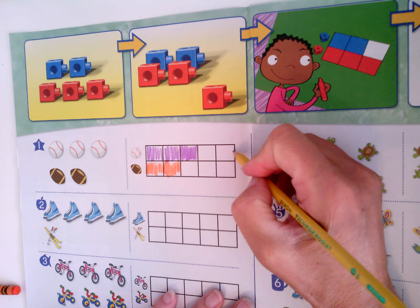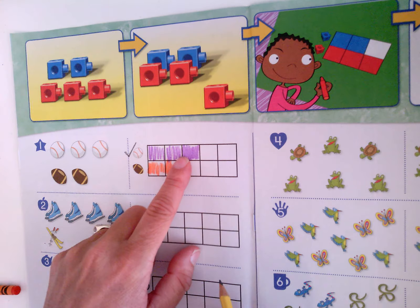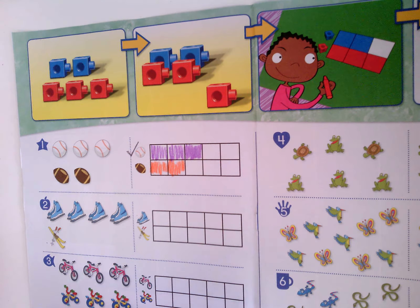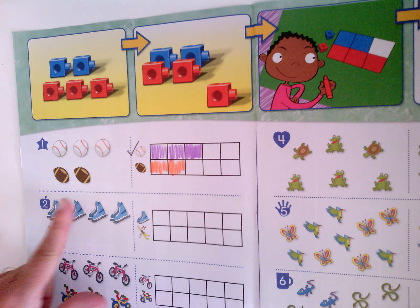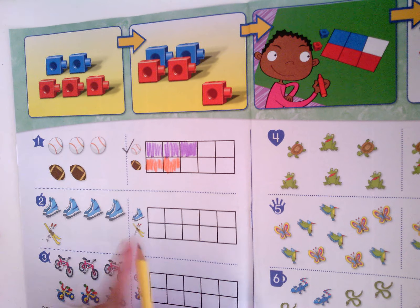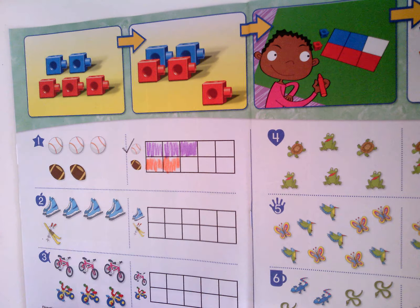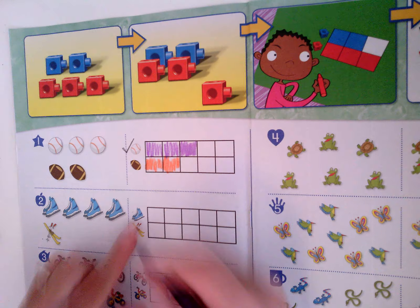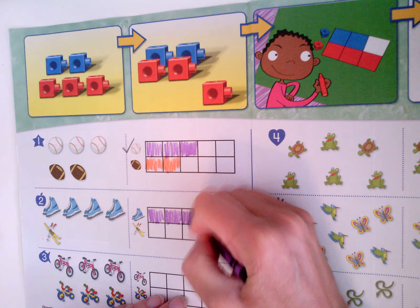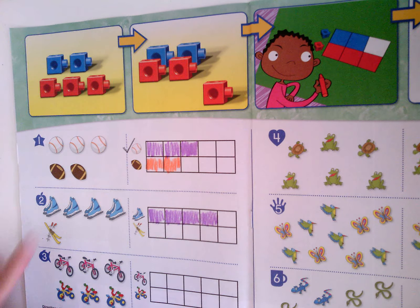Now I'm going to count the skates — this time without my counters, but carefully. One, two, three, four skates, or four pairs of skates. Note: the figure showing the row label doesn't count. So I color one, two, three, four pairs of skates. And how many pairs of skis? One. Do I have more skates or more skis? I have more skates, so we put a check by the skates.